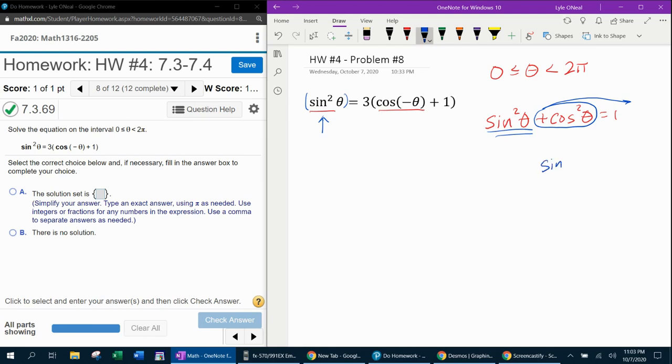So here we're going to have sine squared theta equals one minus cosine squared theta. And now I'm going to substitute one minus cosine squared theta in place of sine squared theta.